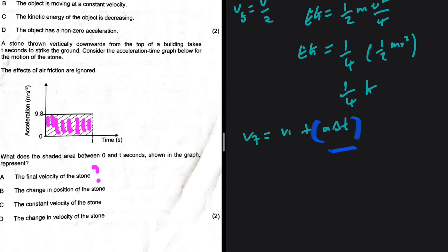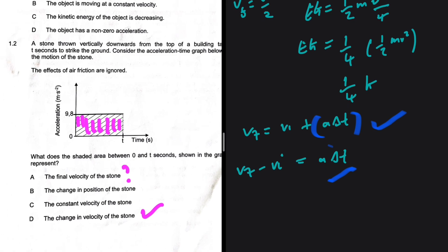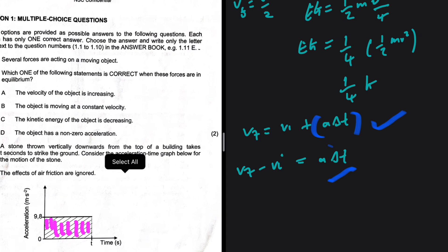From the equation vf = vi + aΔt, we get aΔt = vf − vi, which is the change in velocity. Since the initial velocity is not zero, the area does not give us vf directly. The area represents the change in velocity of the stone — answer D for 1.2.